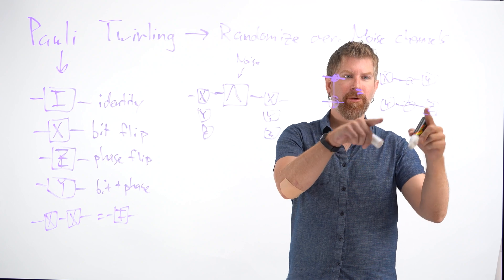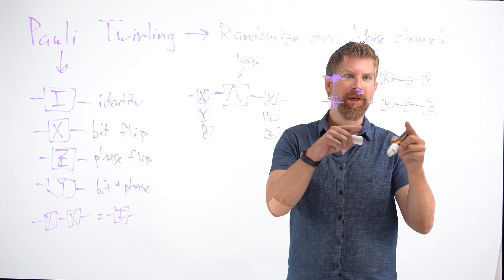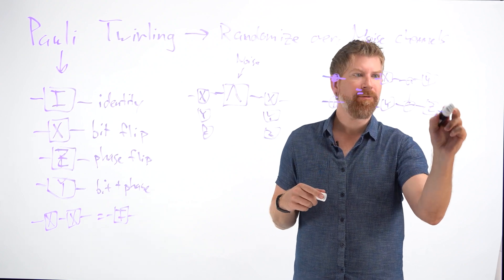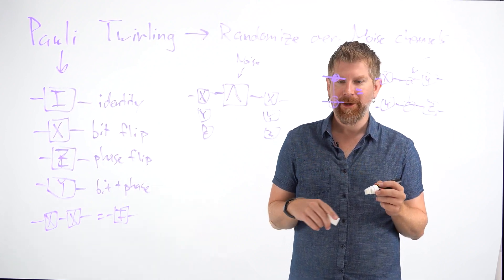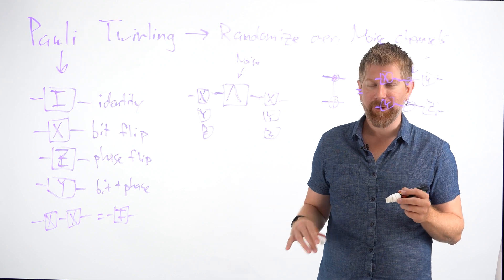So these two, from a quantum mechanics perspective, are exactly the same. But from a noise perspective, the noise being seen on this gate is going to be different because we flipped the qubits around. And that's why we want to average over those.